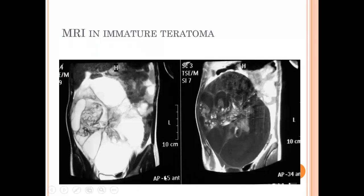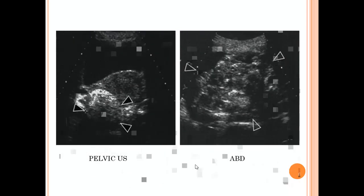Another case of immature teratoma on MRI shows only very small scattered fatty components, thickened septa, and solid parts. CT is more characteristic than MRI in the imaging of immature teratoma.